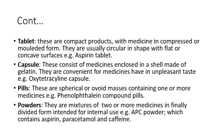A capsule consists of medicines enclosed in a shell made of gelatin. The outer capsule shell is basically made up of gelatin, and capsules are convenient for medicines having an unpleasant taste, so that outer gelatin layer ensures no taste is perceived. Pills are spherical or ovoid masses containing one or more medicines — for example, penicillin compound pills. Powders are a mixture of two or more medicines in a finely divided form intended for internal use, like tablets, capsules, and pills.